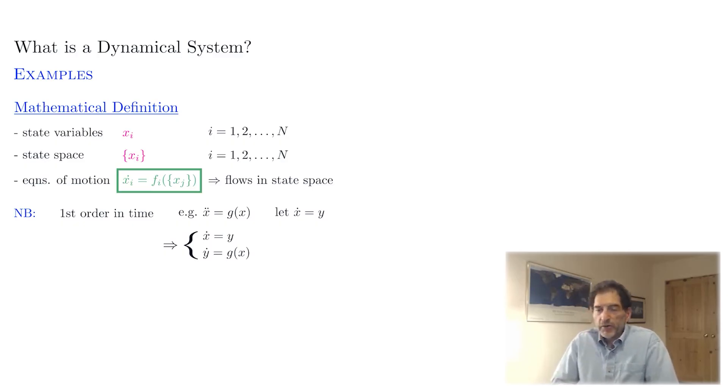So in general, higher order systems can always be reduced in this way to a first order system. A consequence of the first order in time is that the state space flow depends only on the current position. This is just a consequence of the first order nature of the equation. So the subsequent motion depends only on position and nothing else.